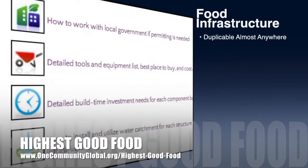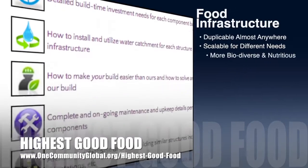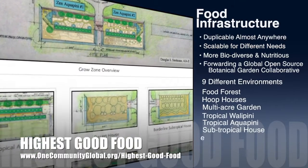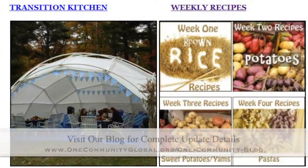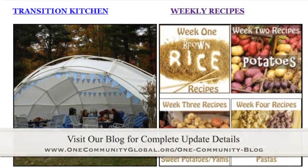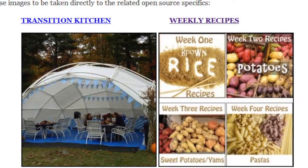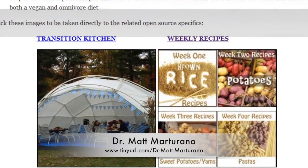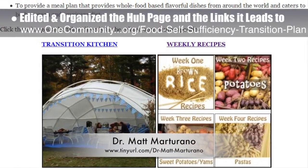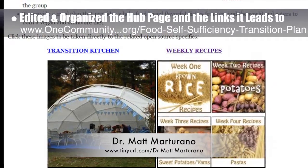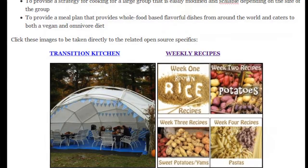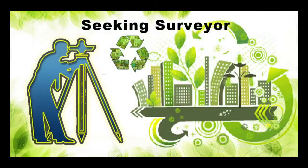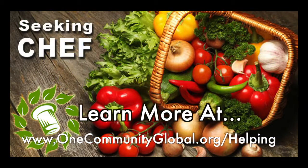One Community's approach to highest good food is duplicable almost anywhere, scalable for different needs, more biodiverse and nutritious, part of forwarding a global open source botanical garden collaborative, and includes nine different free shared and duplicable growing environments. This week, the core team completed another round of organizing the streamlined version of our food self-sufficiency transition plan page, which includes contributions by naturopathic doctor Matt Martirano, creator of the Coherent Model for Comprehensive Digestive Health. We did fine-tune editing, proofreading, and organized the hub page and its links — now approximately 96% complete. We are seeking permaculturalists, an irrigation specialist, a surveyor, and a chef to join our team.